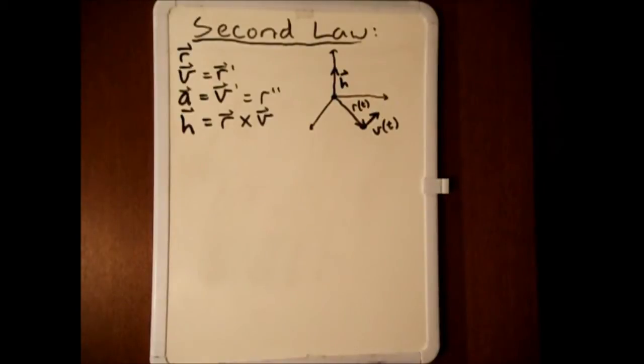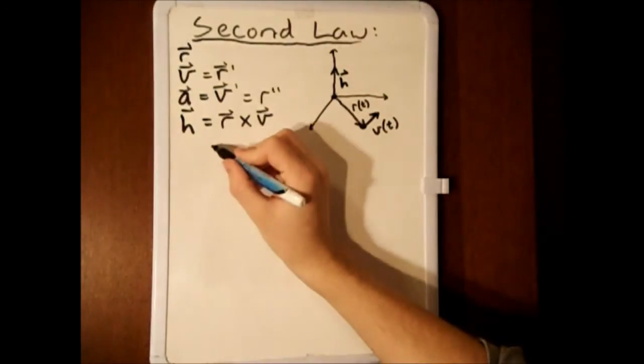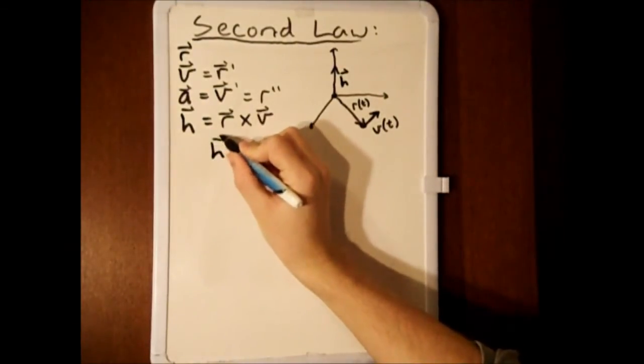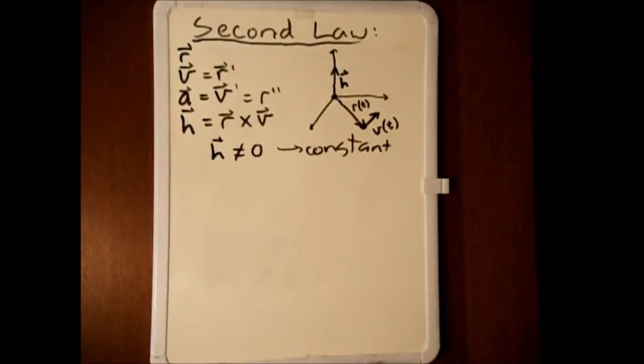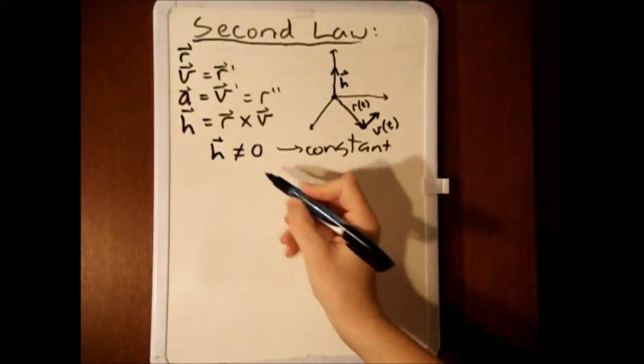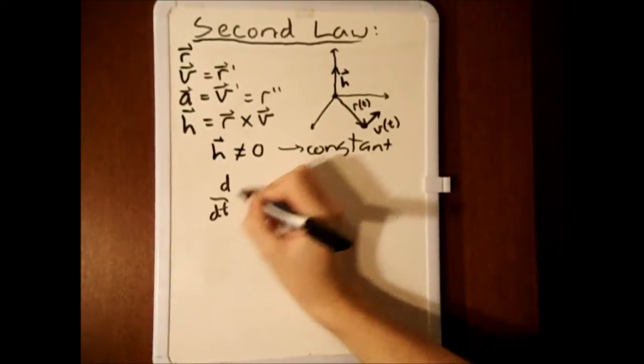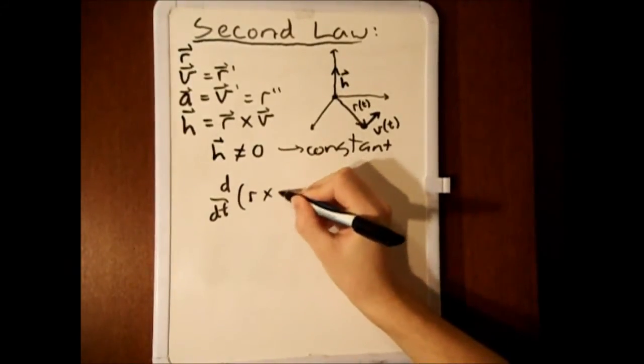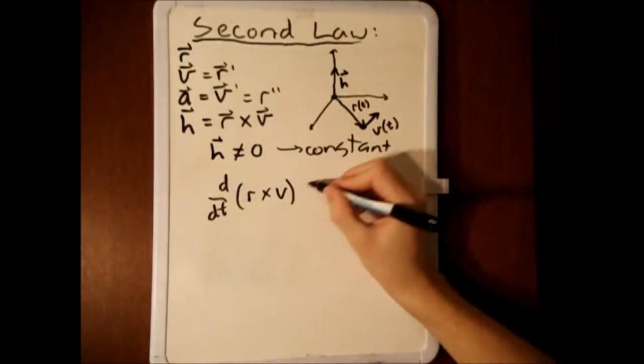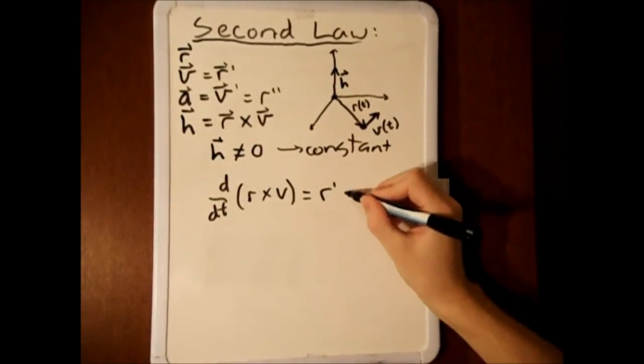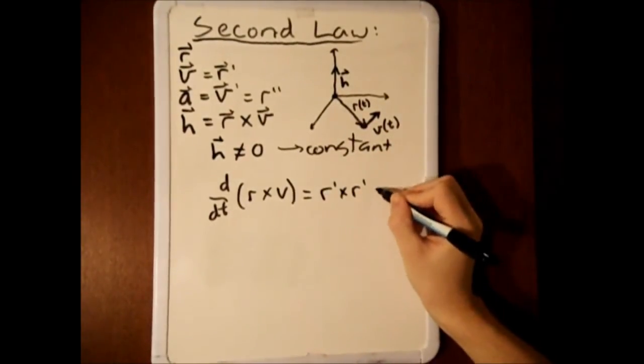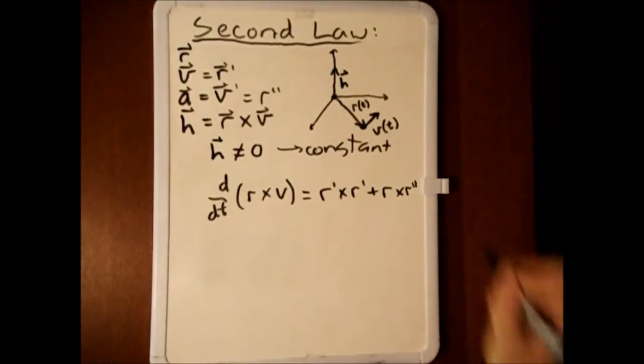It was shown by Stewart in Calculus Early Transcendentals that h is a constant non-zero vector. It was proven quite simply that h was a constant by taking the derivative with respect to time of r cross v, which yields r prime cross r prime plus r cross r double prime.